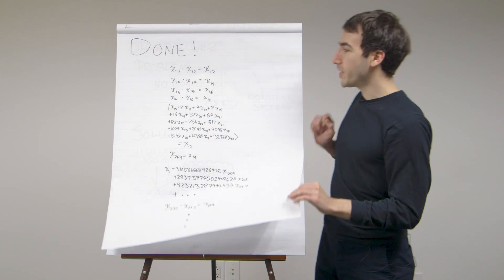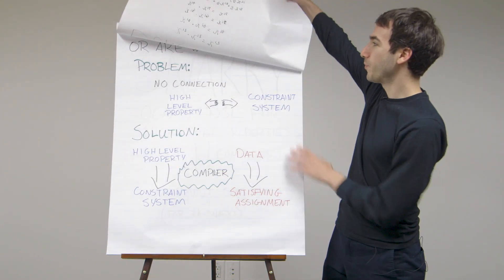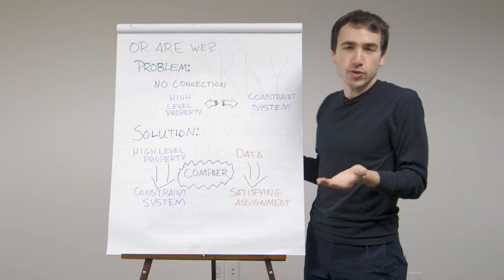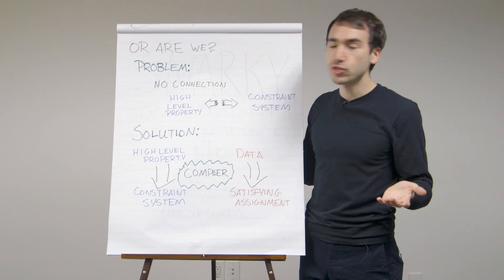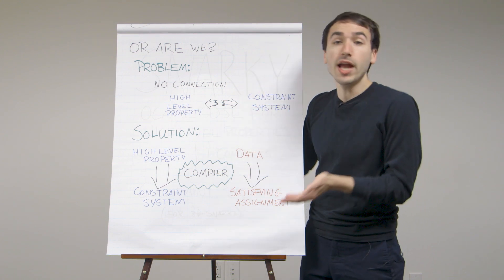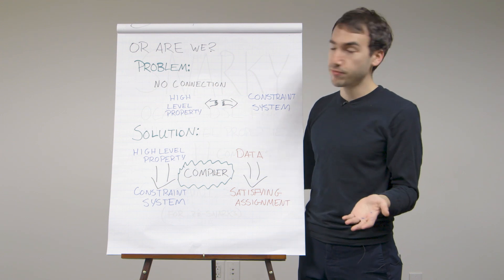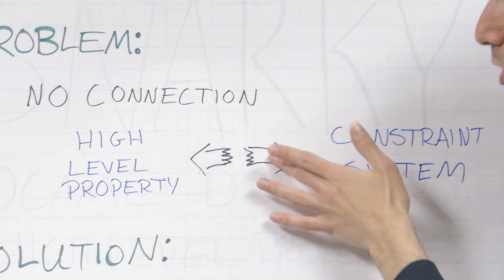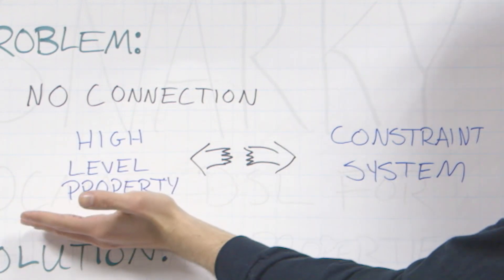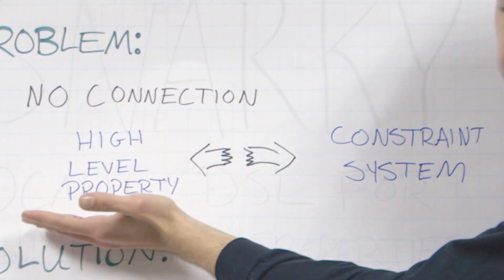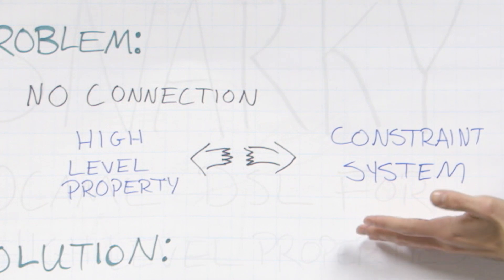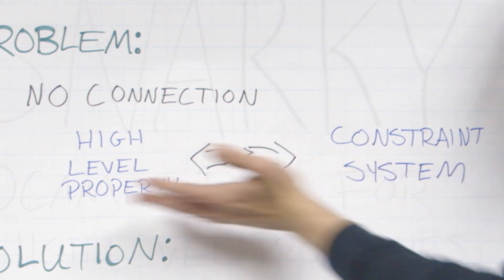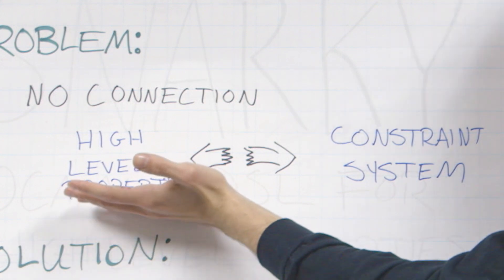Well, not really though, right? We're not really done, because there's a problem. That constraint system I wrote was actually gibberish. And moreover, any constraint system I wrote down probably wasn't going to convince you — because there's no connection whatsoever between the high-level property we wanted to prove about elections and the constraint system.